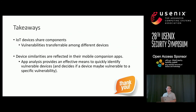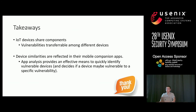The key takeaways are: IoT devices usually share components, and with that sharing, vulnerabilities transfer among different devices. Device similarities are often reflected in their mobile companion apps, meaning app analysis can be an effective means to quickly identify vulnerable devices and determine if a device is vulnerable to a specific vulnerability.